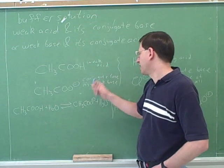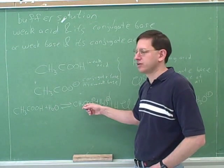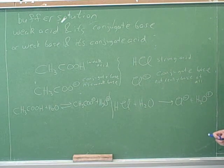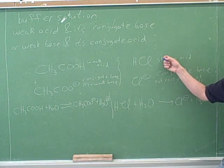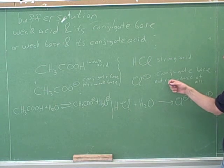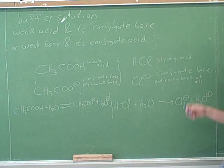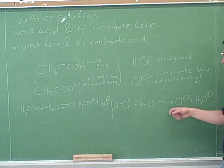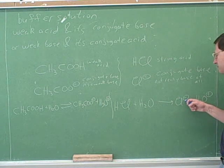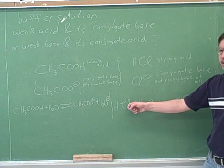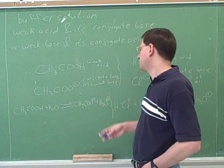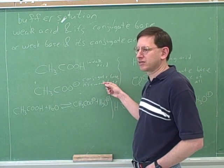The conjugate base is part of that equilibrium. But if you have a strong acid, its reaction goes to completion, which means its conjugate must be hardly basic at all. The chloride is not going to pick up a proton and move to the left at all. So we want to use a weak acid because then we know its conjugate base will also be weak.